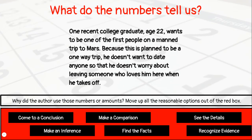Let's take a look at a different text now. While I read, highlight the numbers that you see. 'One recent college graduate, age 22, wants to be one of the first people on a manned trip to Mars. Because this is planned to be a one-way trip, he doesn't want to date anyone so that he doesn't worry about leaving someone who loves him here when he takes off.' Take a moment and pause the video if necessary to finish your highlighting.